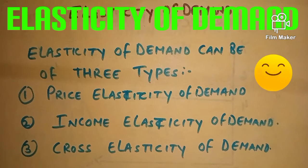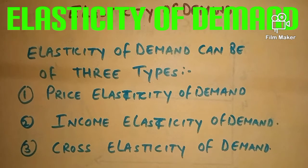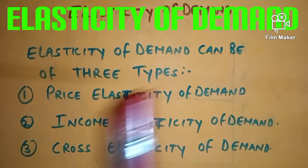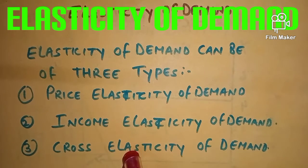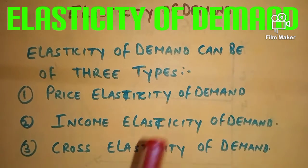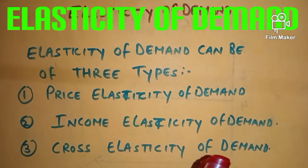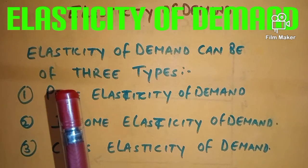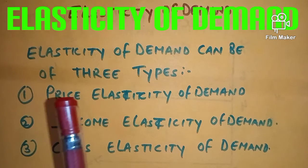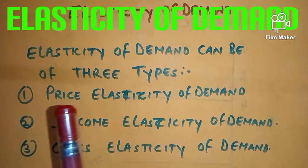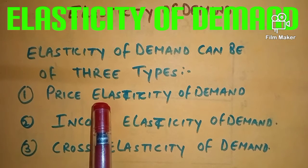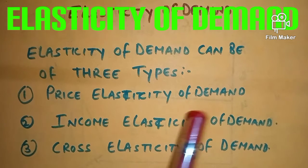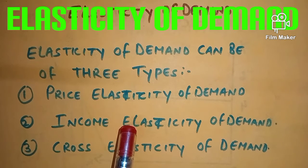Elasticity of demand can be of three types. Number one: price elasticity of demand — if there is a change in price of a commodity, then demand changes accordingly. Number two: income elasticity of demand — if the income of the consumer changes, then there will be a change in the quantity demanded by the consumer.